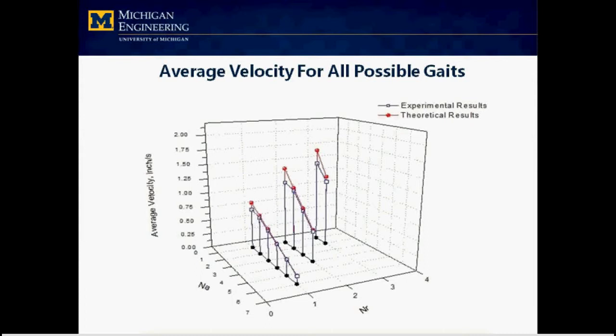First, we compare the average speed for all possible gates of eight-segment robot. Qualitatively, the experimental results will coincide with the theoretical results.